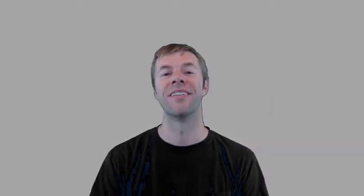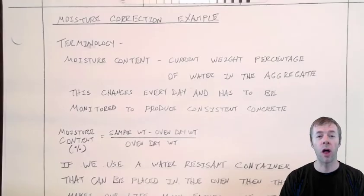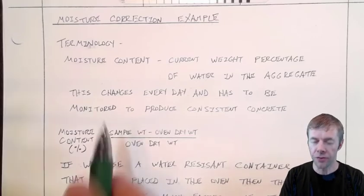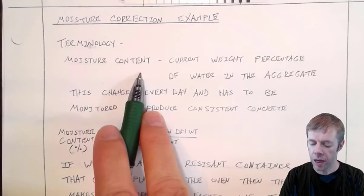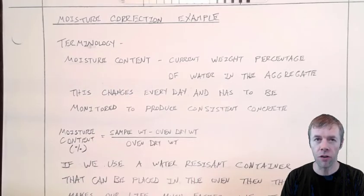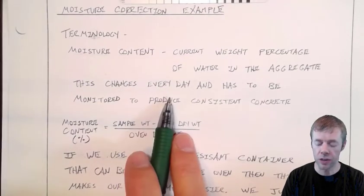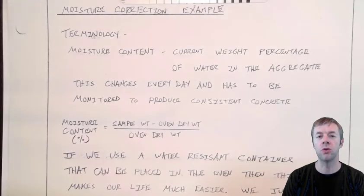We get to use numbers. Moisture corrections — we're going to go over terminology just for a second. The moisture content is an important number. It's the current weight percentage of water inside the aggregate, and this is going to change every day. This is why we have to do moisture corrections — it changes all the time. It has to be monitored so that you can produce very consistent concrete.